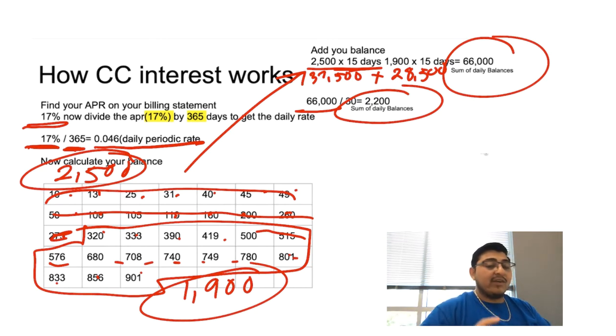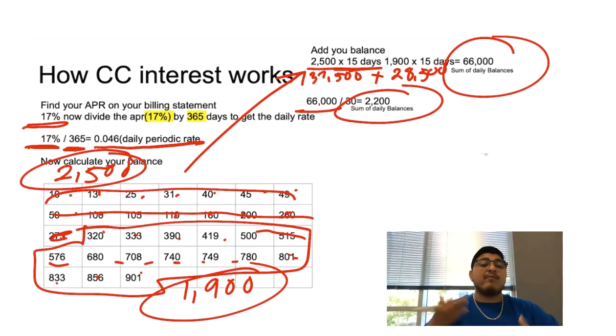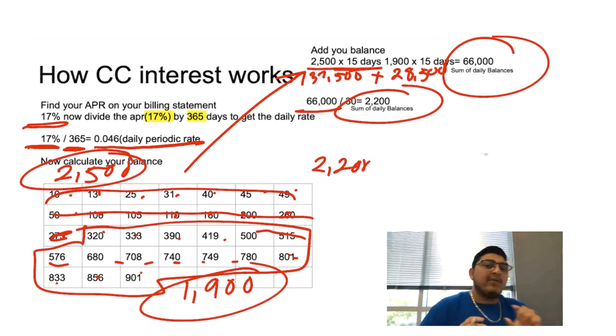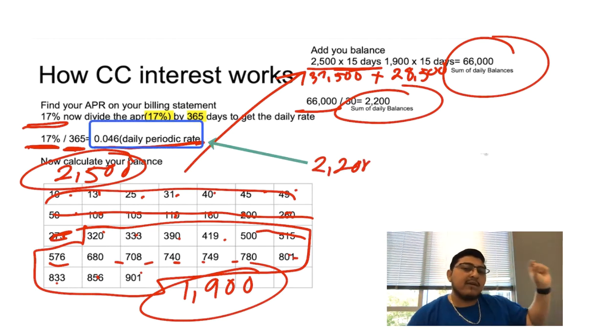Now that we have these numbers, we can actually start doing a little bit more math. We're almost towards the last step, so this video is almost done. We're going to get $2,200. Remember the daily periodic rate in the beginning of this video where we calculated? Now we're going to use that number to include it in this formula.